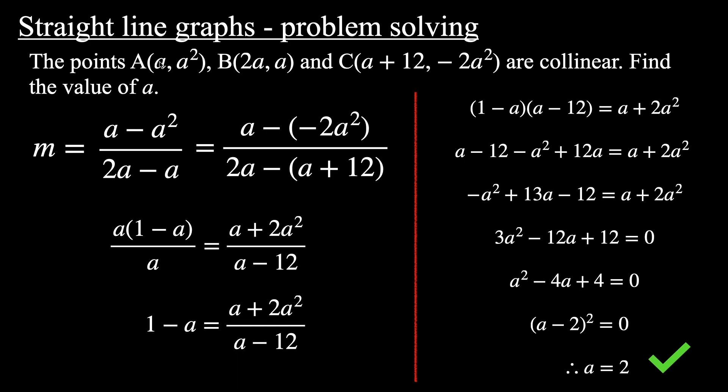Just going back to the question, you can figure out what all these points are now. A would be (2, 4), B would be (4, 2), C would be (14, -8). And you can also go ahead and find the equation of that line if you wanted to. Next problem.